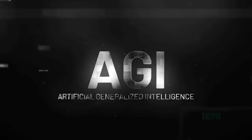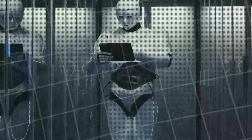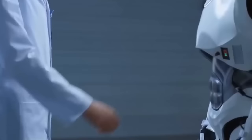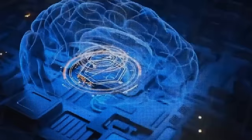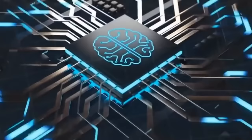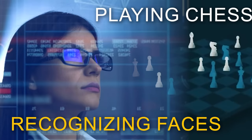AGI is an AI that can perform any intellectual task that a human can do, such as reasoning, learning, planning, creativity, etc. It is different from Artificial Narrow Intelligence, or ANI, which is what most current AI systems are. ANI can only do one specific thing very well, such as playing chess or recognizing faces, but it can't do anything else or transfer its skills to new domains.